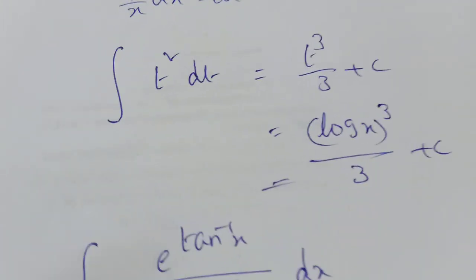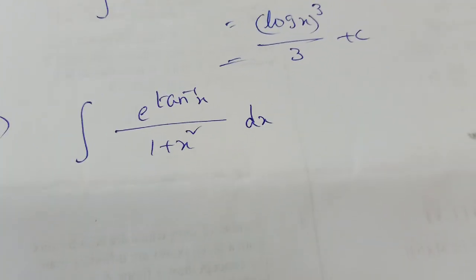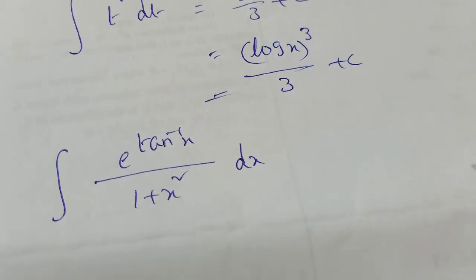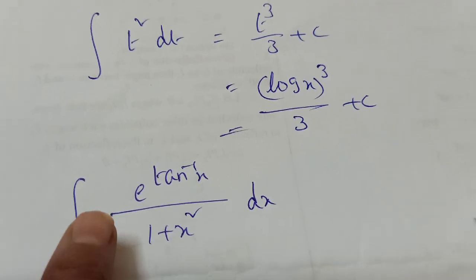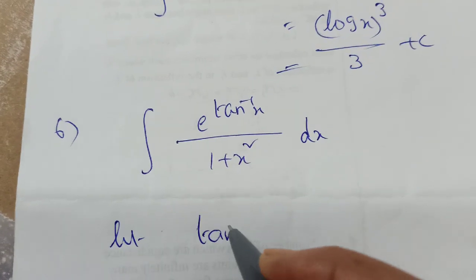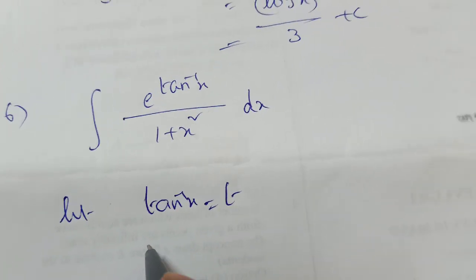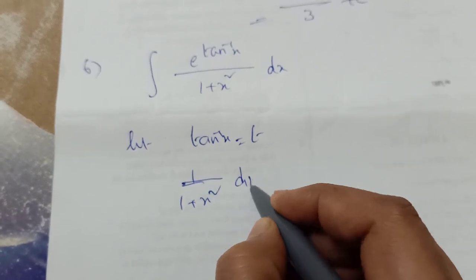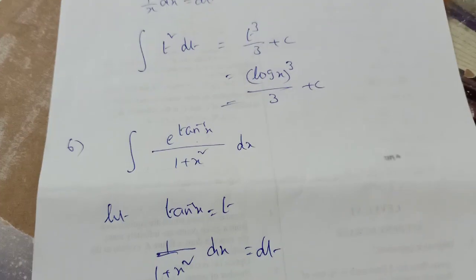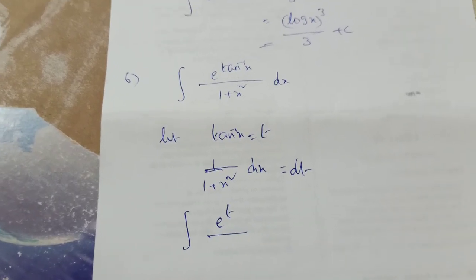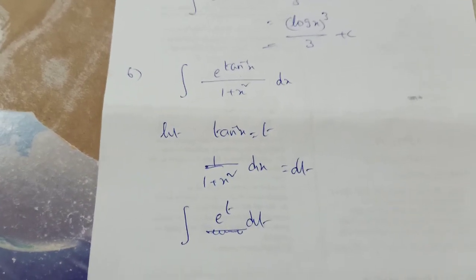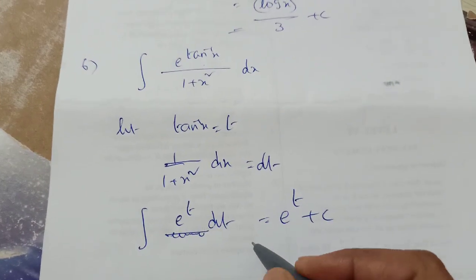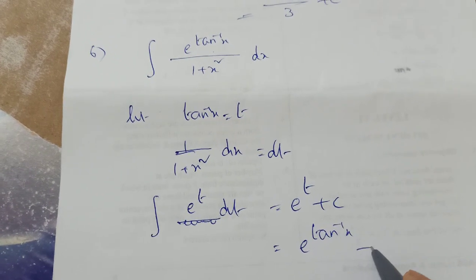Next problem: the integration of e^(tan⁻¹x)/(1+x²) dx. The derivative of tan⁻¹x is 1/(1+x²), so I take t = tan⁻¹x. Then dt = 1/(1+x²) dx. Substituting, the integral becomes the integral of e^t dt, which equals e^t + C. Substituting back, the answer is e^(tan⁻¹x) + C.